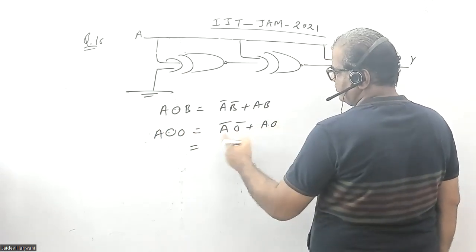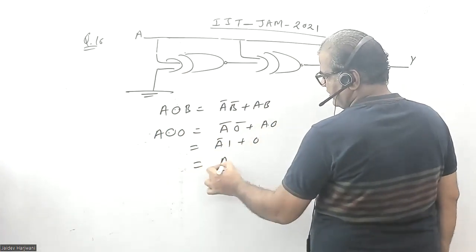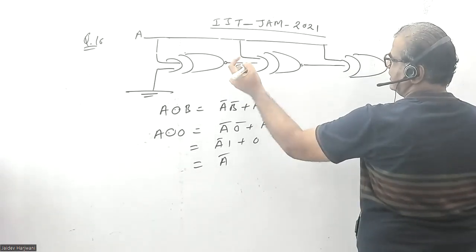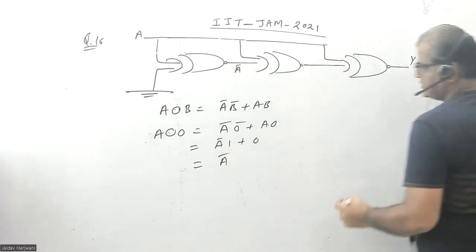This will give you A bar times 1 plus 0, which becomes A bar. Now this output A bar is combined with A in the second XNOR gate.